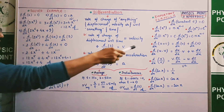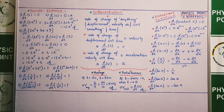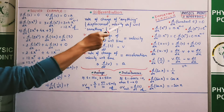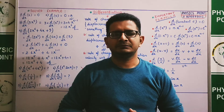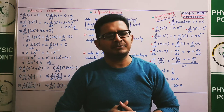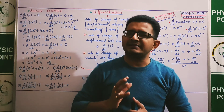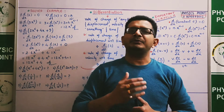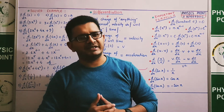इन examples की मदद से हमने कोशिश किया कि इन formulas को use करना सीख सकें। अब कुछ homework examples दिए हैं — 5, 6, 7, 8, 9, 10 — जो आप attempt कर सकते हैं। जो number mention है corner पर, आप उस number पर WhatsApp कर सकते हैं। इस video के next part में discuss करेंगे कि differentiation के concept को use करके NEET examination में किस तरह के questions पूछे जाते हैं।